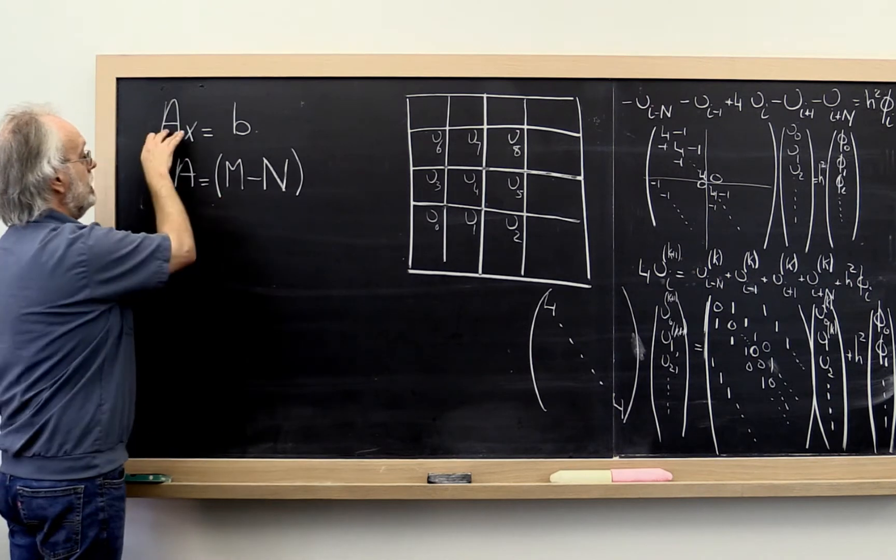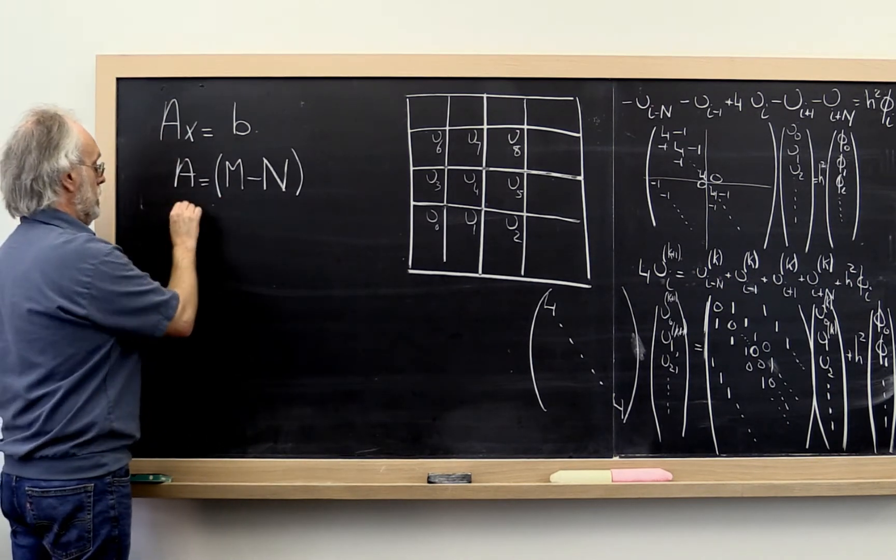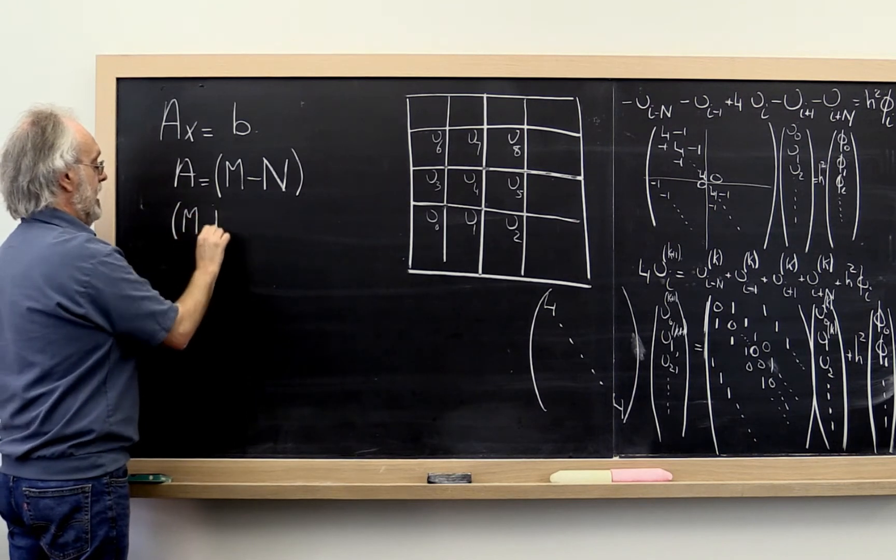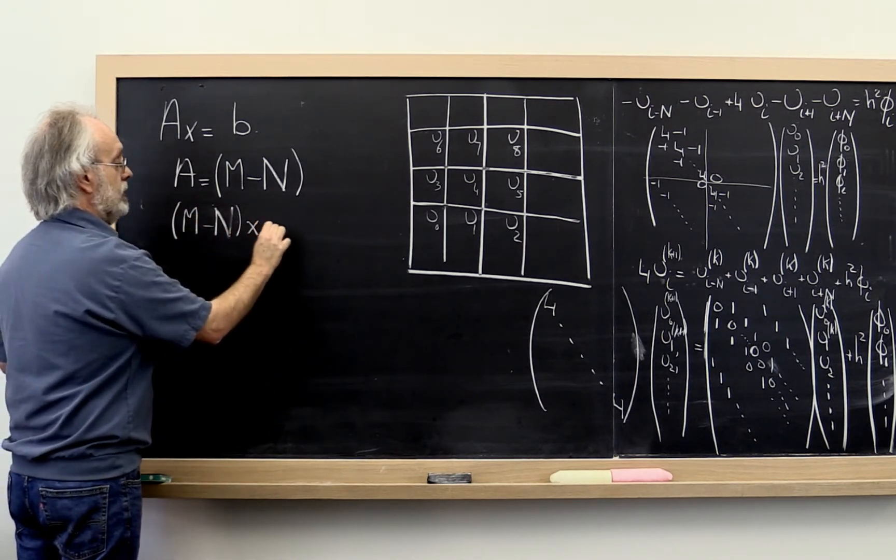And we can take that and we can plug it into the original linear equation. And we notice that M minus N times the vector X is equal to B.